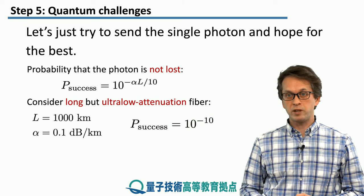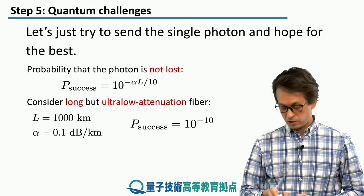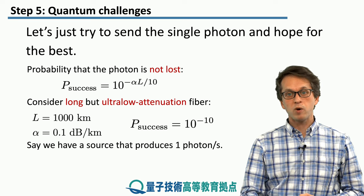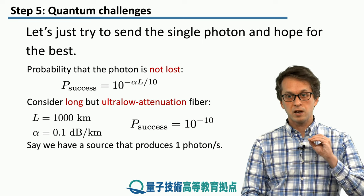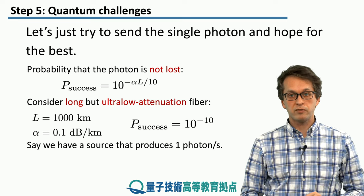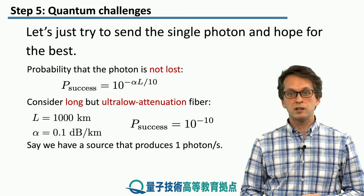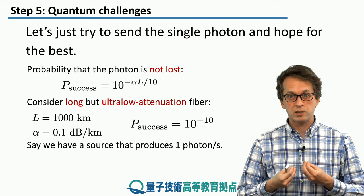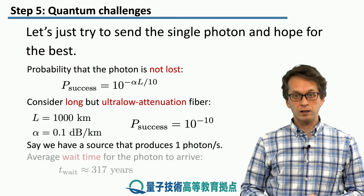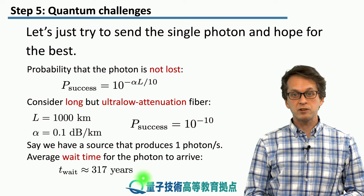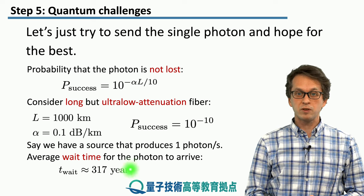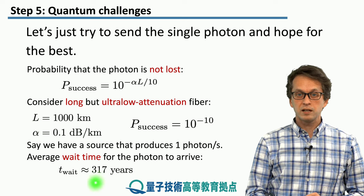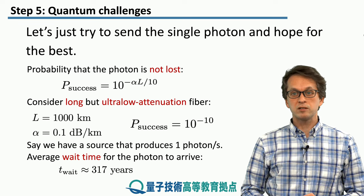This looks like a very small number, and indeed it is. To give some intuition of how small: consider a source that produces one photon every second. How long do we need to wait for someone 1000 kilometers away to successfully receive a single photon? On average, 317 years. So even with ultra-low-loss fibers over moderate distances, sending a single photon directly down the fiber is not a good strategy.